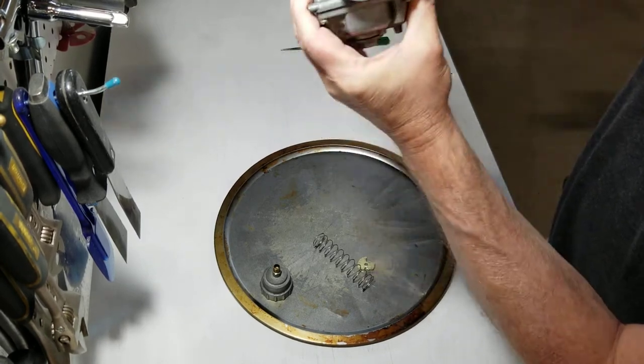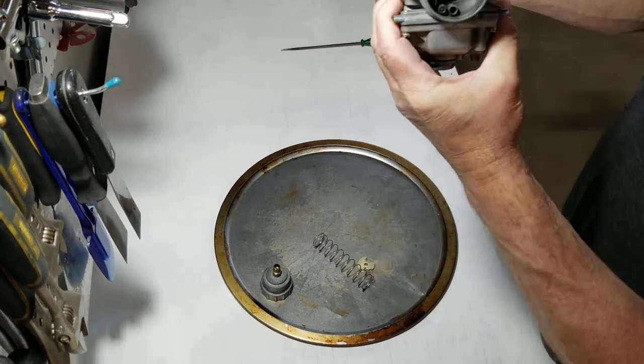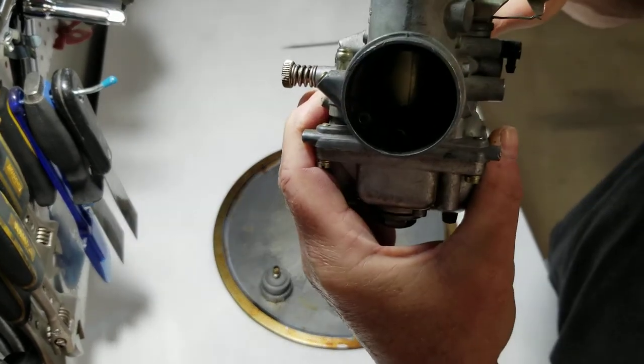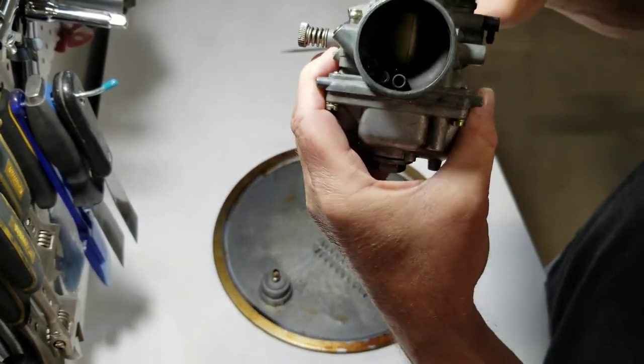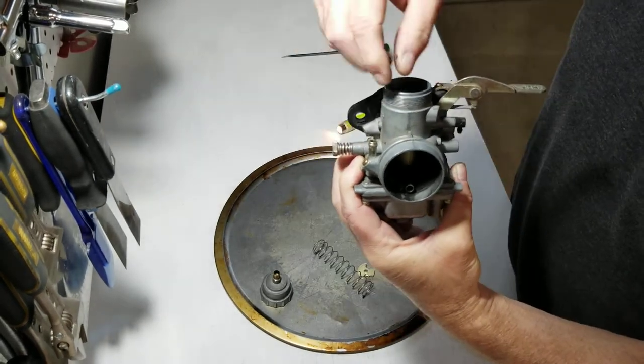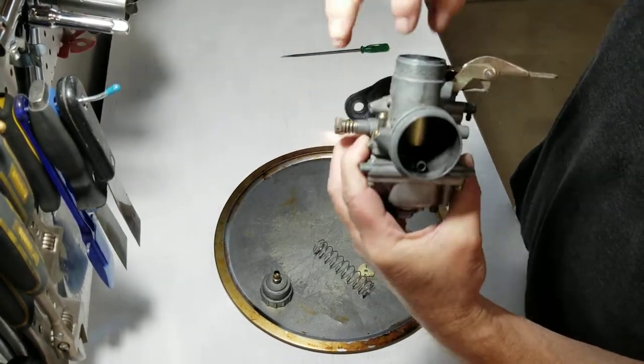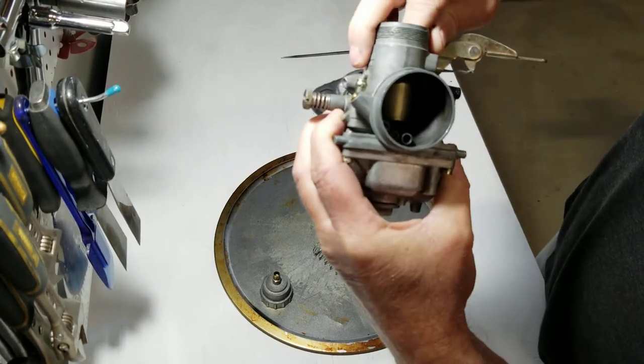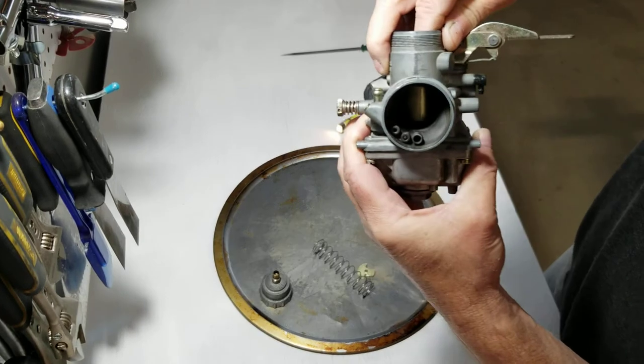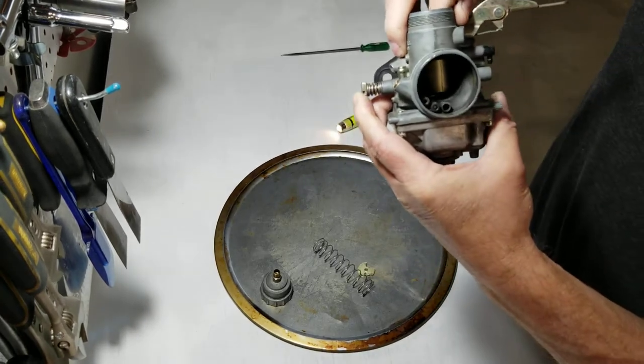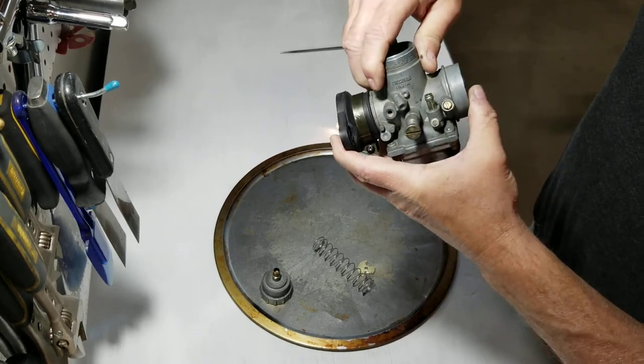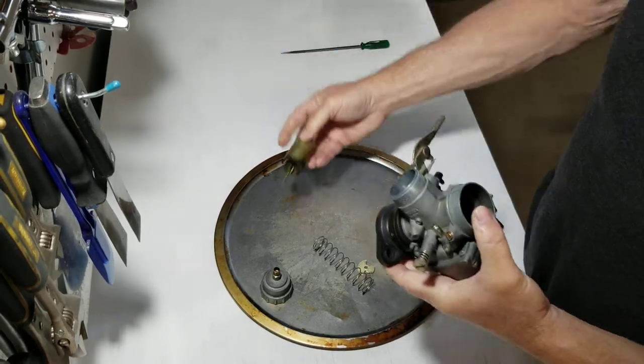I'm gonna shine a light through the other side here. When you screw this in, the slide gets lifted up like that, just slightly. Doesn't have to come up much, just slightly and your RPMs will go up. You adjust that to get the idle where you want it and then just leave it.